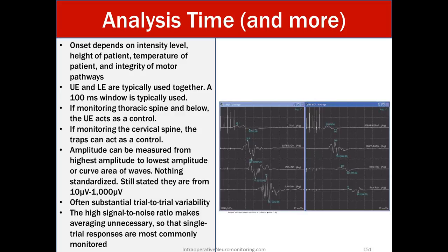Amplitude can be measured from highest amplitude to lowest amplitude or curve area of waves. Nothing standardized there. Still stated they are from 10 microvolts to 1000 microvolts. There are a number of different trials. Often substantial trial variability happens in each case and the high signal to noise ratio makes averaging unnecessary so that single trial responses are most commonly monitored. If you look at the picture on the right, you can see that this person is only using a train of about looks like five, but they have a pretty prolonged inner stimulus interval.